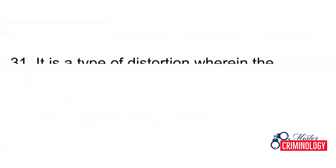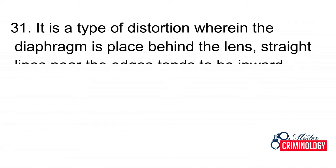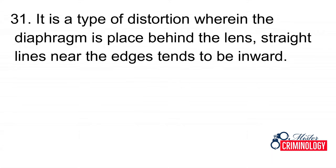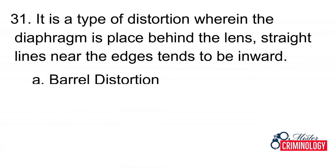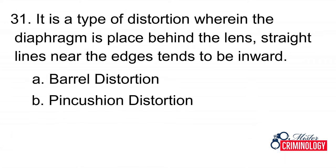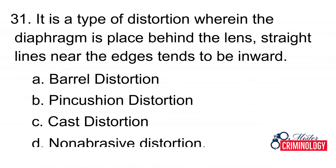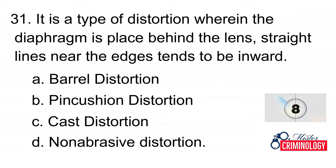Question 31: It is a type of distortion wherein the diaphragm is placed behind the lens and straight lines near the edges tend to bend inward. A. Barrel distortion, B. Pincushion distortion, C. Cast distortion, D. Non-abrasive distortion. Answer: B. Pincushion distortion.